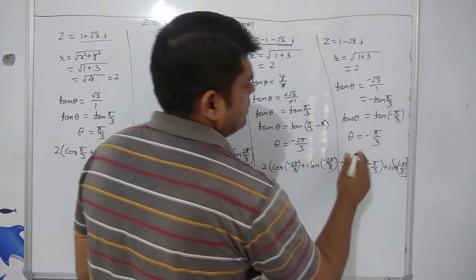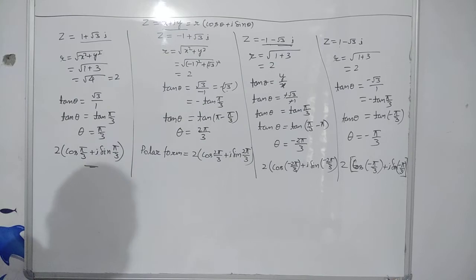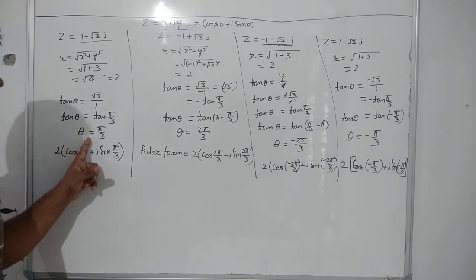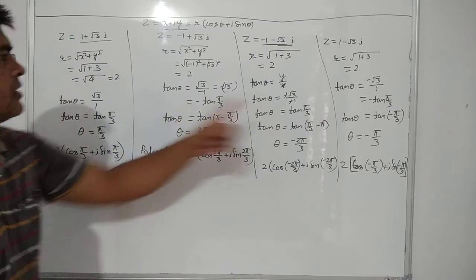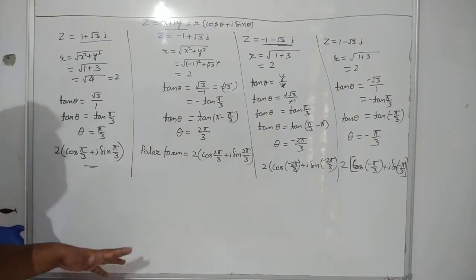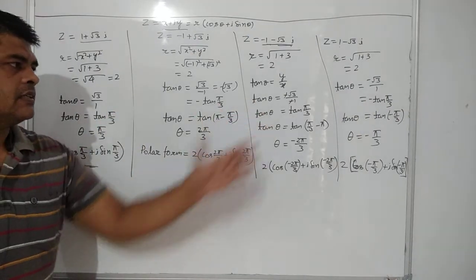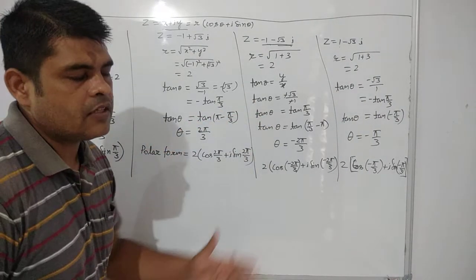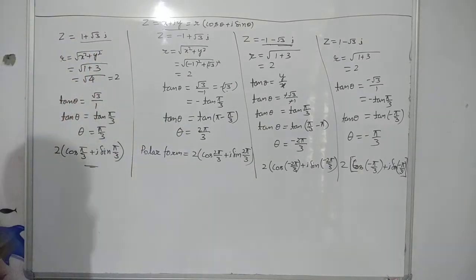I hope it is very clear to all of you. Be very careful here while taking the value of theta and you will never go wrong. So, this is how we have to represent a complex number in the polar form.